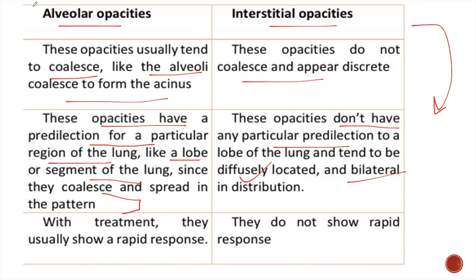Alveolar opacities are short-lived opacities. With treatment, they usually show a rapid response. But interstitial opacities are long-lived opacities and they don't show any rapid response to medications.